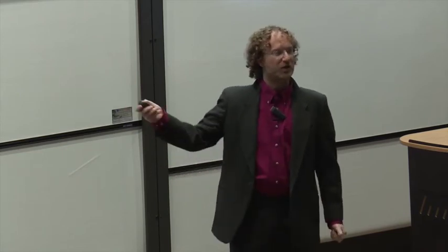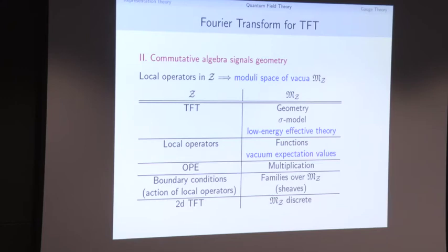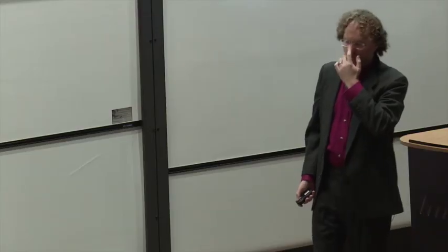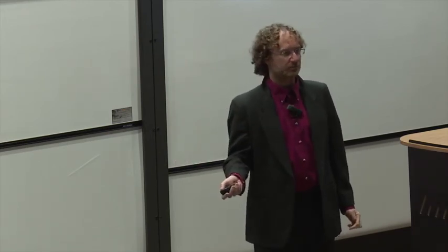What does that mean physically? Instead of thinking of an abstract field theory, we build a sigma model — a theory of maps into a target. We've constructed some geometry. The local operators have become functions on the moduli space — called VEVs (vacuum expectation values) in the physics literature. The operator product expansion is just pointwise multiplication of functions on the moduli space. The boundary conditions or states — on which operators were acting — become spectrally decomposed as families of vector spaces over the moduli space.